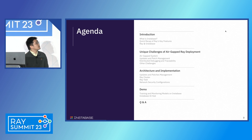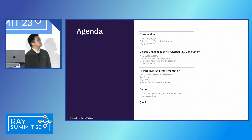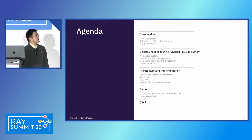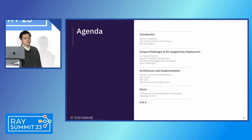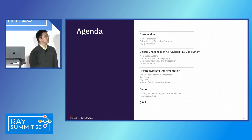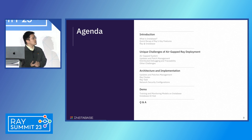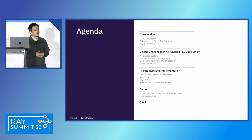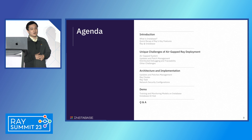This is today's agenda. In the first section we'll do an introduction — what is Instabase — and a quick recap of Ray's key features for our business, and how we use Ray at Instabase. Next, we'll talk about unique challenges of air-gapped Ray deployment with tight security controls. Then Ruoyu will discuss architecture and implementation details. And finally, I'll do a live demo showing how we train and serve a model. If time allows, we'll do a Q&A.